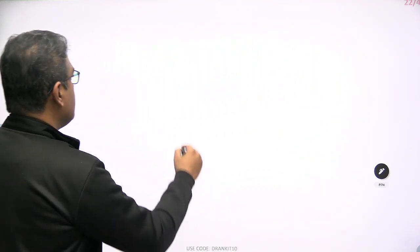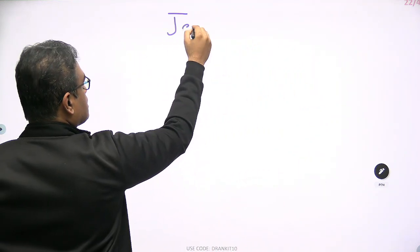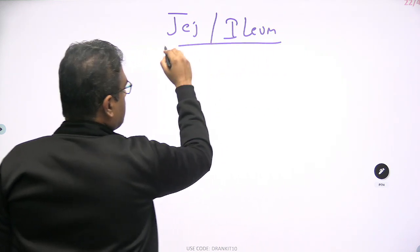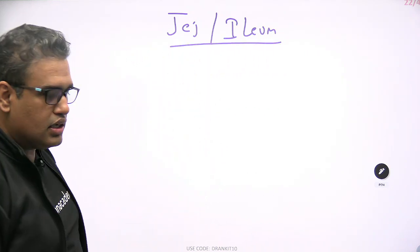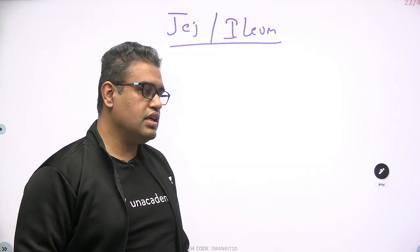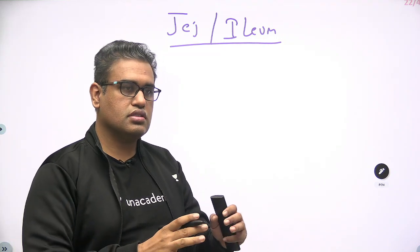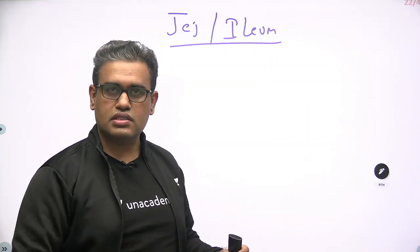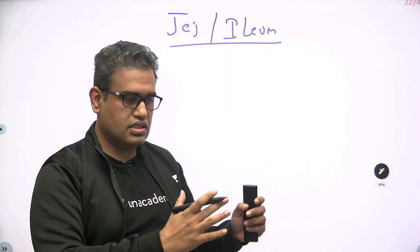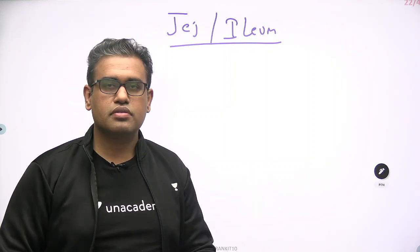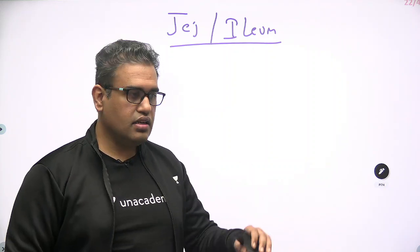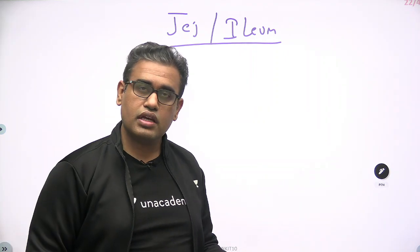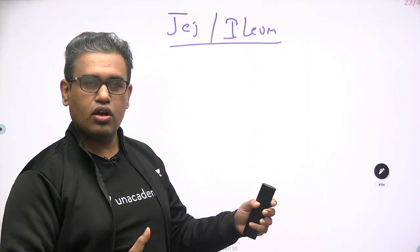Now the topic of Jejunum and Ileum — why do we need to know this topic? Because once you open up the abdomen of a patient in an emergency laparotomy, it becomes very hard to differentiate Jejunum and Ileum. They are not different at a particular point; it's a gradual change, not a sudden change. A lot of resection anastomosis happens here, a lot of necrosis can happen — and it's a very long structure.